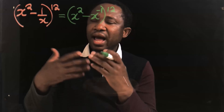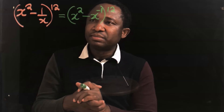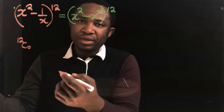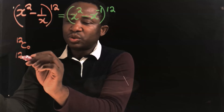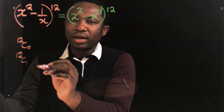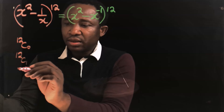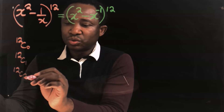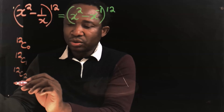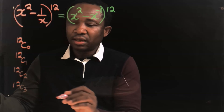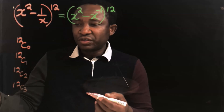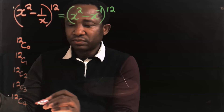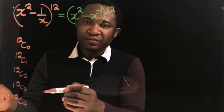Now I can apply binomial theorem. The coefficient of the first term is 12 combination 0. The next will be 12 combination 1. The coefficient of the third term will be 12 combination 2. Then we have 12 combination 3, which is the coefficient of the fourth term, and 12 combination 4, which is the coefficient of the fifth term.